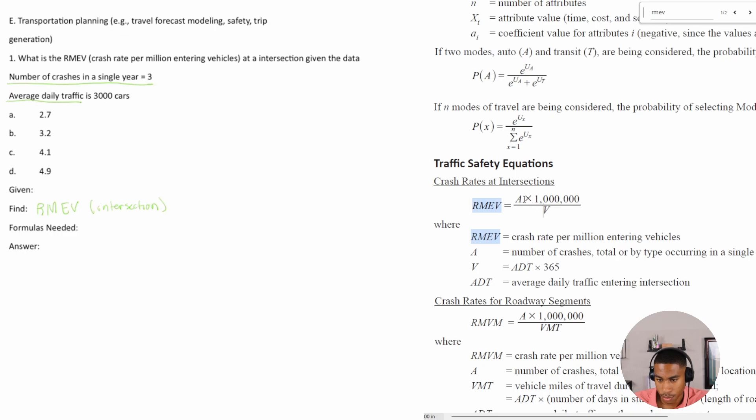Okay, so the variables that we need is A and V. So do we have A? A is the number of crashes in a single year at the location. So we have A, which equals three. This information is given. This is why we write this stuff out.